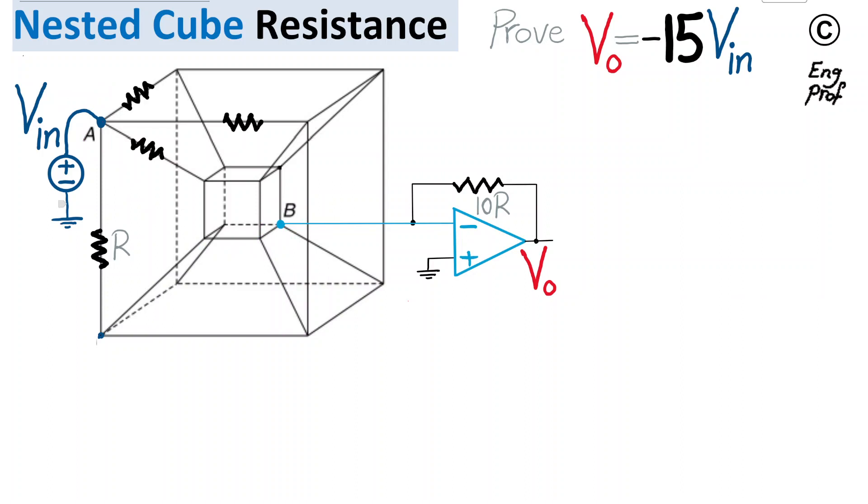From node A to node B, we want to find an equivalent resistance for this double-cube network so that we can replace it with this equivalent resistance. Then the overall circuit would look as simple as this: R-equivalent and then just an inverting amplifier scenario using one op-amp, 10R, and then going to V-out.